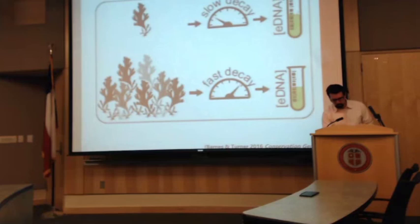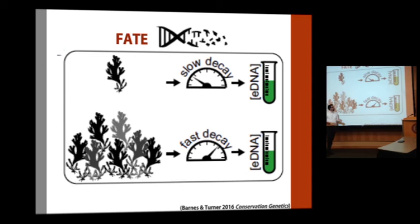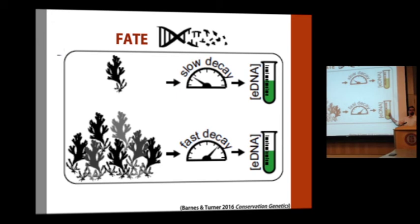Related to transport is the fate of eDNA — after DNA is produced and in the environment, how long does it stick around? If there's just one organism and the DNA decays very slowly, that might be one result. But if DNA is degrading really rapidly, a whole bunch of organisms might produce the same amount of detectable DNA. We've done experiments to look at how long this stuff sticks around, and to what extent we're at risk of collecting relics of organisms from the past.